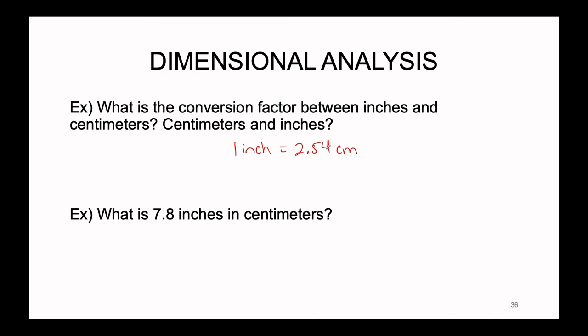The key fact is that one inch is exactly equal to 2.54 centimeters. There aren't actually that many exact conversions between the metric and the imperial system, but this is one of them. We can use this to set up not only the conversion from inches to centimeters, but also in reverse from centimeters to inches.